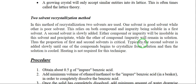You have one good solvent and one poor solvent. The good solvent is one in which your product is soluble at room temperature. The poor solvent is one in which your product is insoluble. First, take 0.5 gram or 1 gram of impure benzoic acid, then add a minimum amount of good solvent.